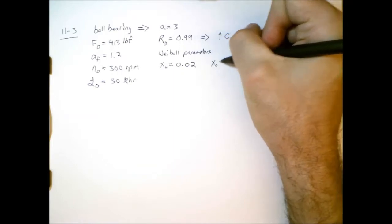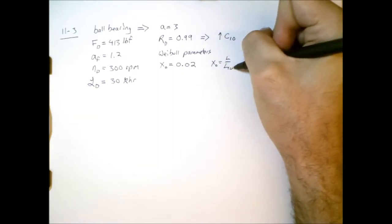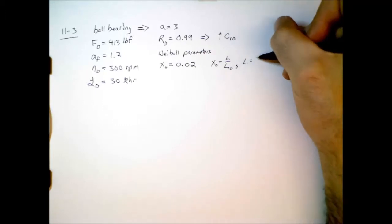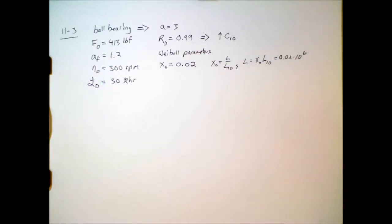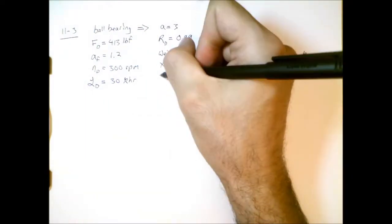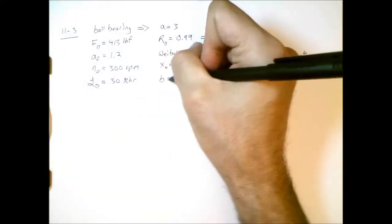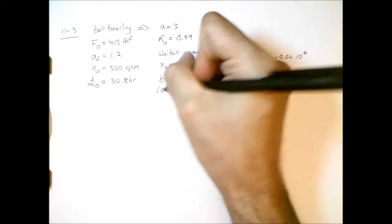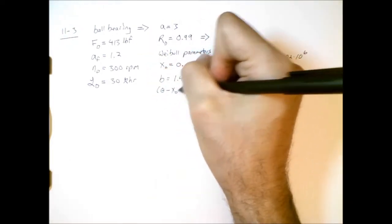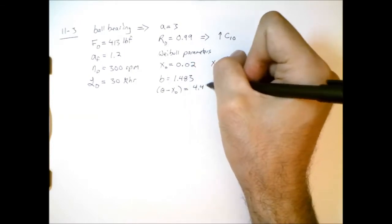The other Weibull parameters include the shape parameter, which is 1.483, and then we're also given this value theta minus x0, and that's 4.439.